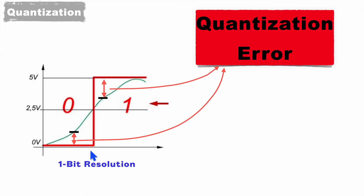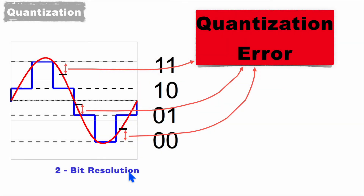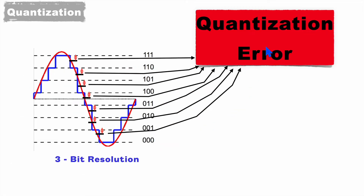Let's see the same thing when we use 2-bit resolution. In 2-bit resolution we have more steps — 4 steps. The lowest is 00, then 01, then 10, and finally 11 for maximum voltage 5 volt. Here we have lesser quantization error compared to the 1-bit resolution case where the error was very high. If we further increase our resolution to 3-bit, this quantization error will be reduced further and we'll be able to track the analog signal in a far better way. As we increase resolution, the quantization error reduces more and more. So higher resolution provides lesser quantization error, allowing us to track the analog signal better.